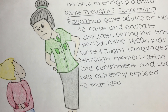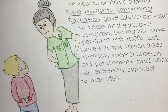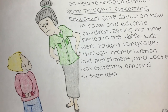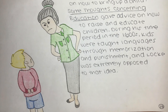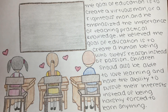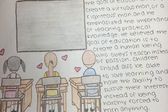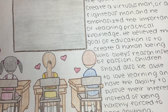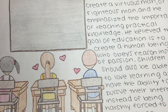John Locke also wrote a letter addressing his advice on how to bring up a child. Some Thoughts Concerning Education gave advice on how to raise and educate children. During his time period in the 1600s, kids were taught languages through memorization and punishment, and Locke was extremely opposed to that idea. His opinion stated that the goal of education is to create a virtuous man, and he emphasized the importance of teaching practical knowledge. He believed children should love learning and have the ability to pursue their interests instead of being harshly forced to learn.